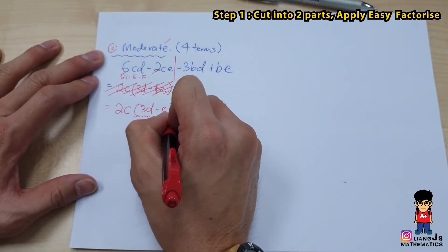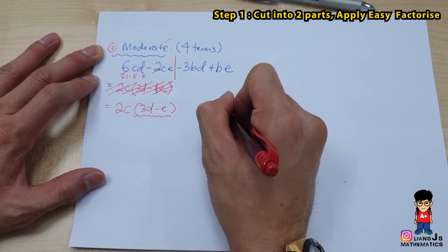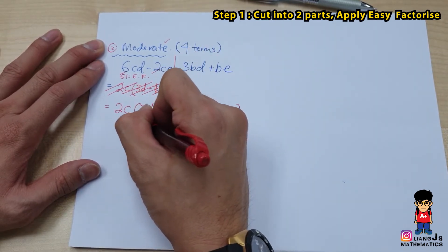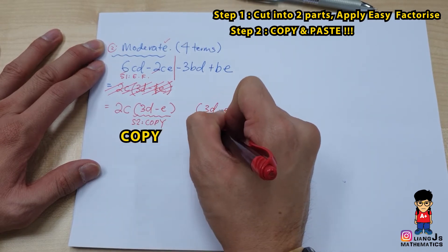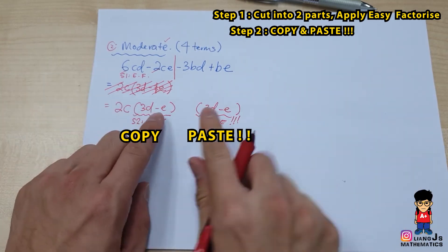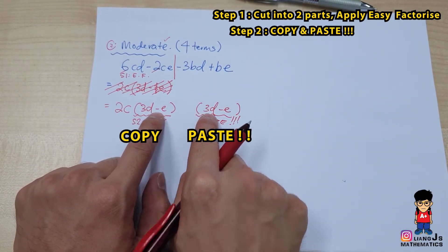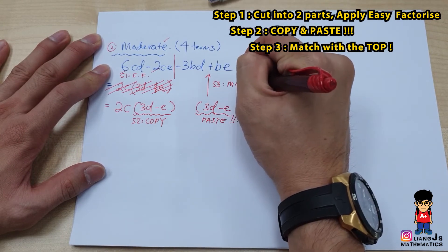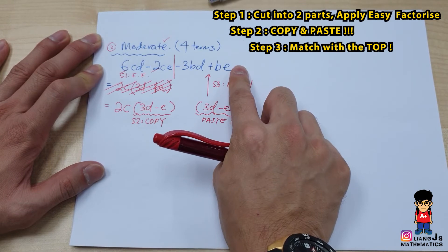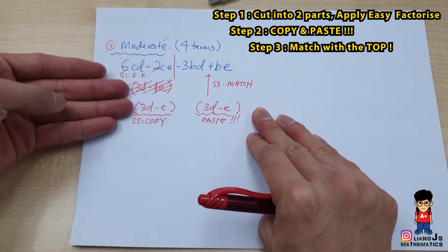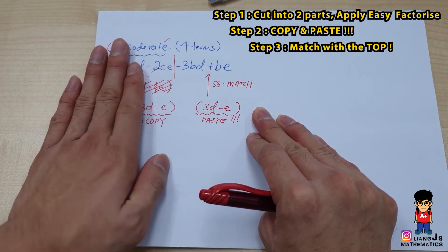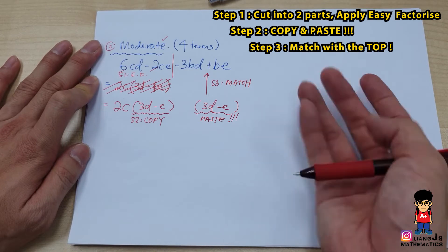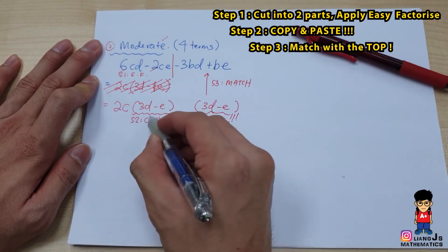Step 2: copy and paste. Rather than applying easy factorize on the second half and risking an error, you copy and paste the bracket from Step 1 — which is (3D minus E) — directly. Remember, these two brackets must be exactly the same. Step 3: go to the second half and match it to see whether you get the same bracket.